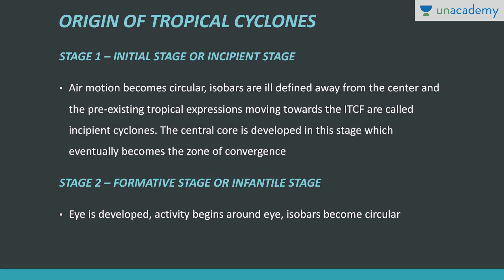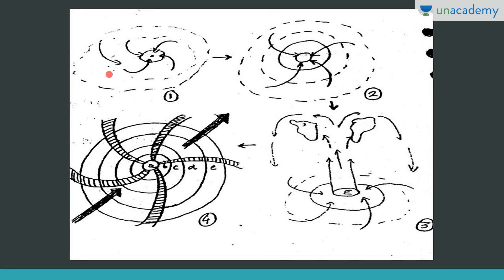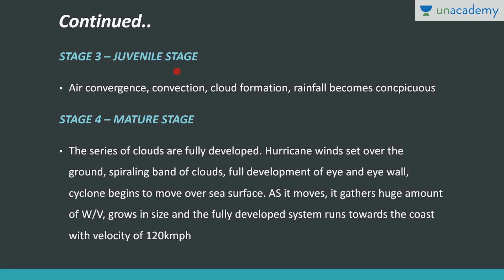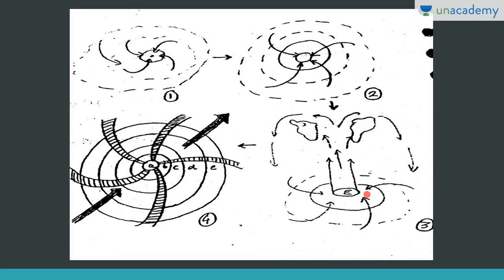In the second stage, the formative stage, the eye will be developed and activity will begin around the eye. In this case the isobars are becoming circular — in the first stage isobars were ill-defined, but now the eye has developed and isobars are getting defined. In the third stage, the juvenile stage, air convergence, convection, cloud formation, and rainfall all become conspicuous. Cumulonimbus cloud formation is taking place and the winds are descending at the periphery.